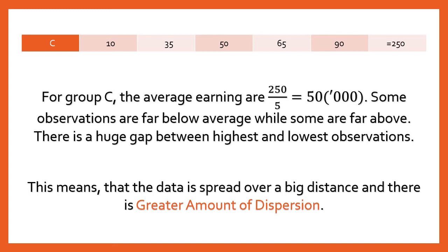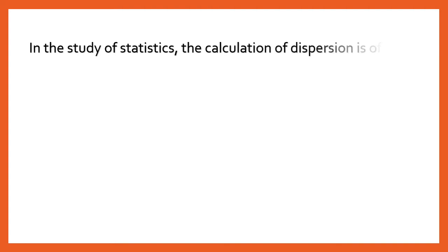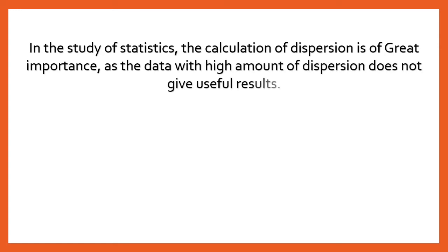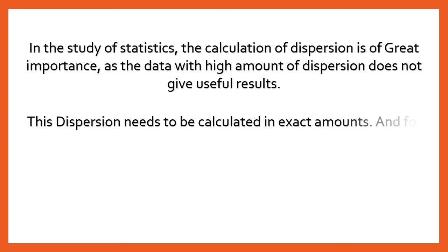Why do we actually calculate dispersion in statistics? Because data with a high amount of dispersion does not give useful results. For example, a river may have an average depth of 50 centimeters, but the deepest part might be 200 centimeters. If you're not a strong swimmer and step into that 200 cm depth, you may be in danger — so data with very high dispersion can be misleading.